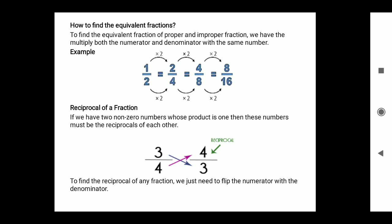If we have two non-zero numbers whose product is one, then these numbers must be reciprocals of each other. So to find the reciprocal, we swap the numerator and denominator — multiply each other.